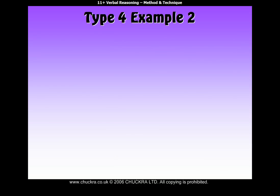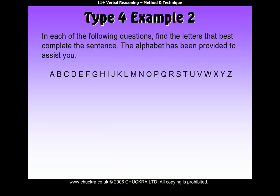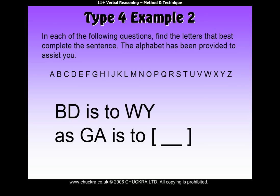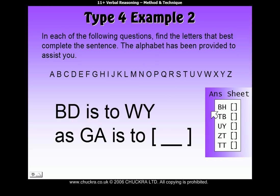Here's another Type 4 example. In each of the following questions, find the letters that best complete the sentence. The alphabet has been provided to assist you. You'll also notice that we have a sample multiple choice answer, and you'll see why in a second. If we try to do this question in the same way as usual, by finding how we get from B to W and then how we get from D to Y, let's just try that.